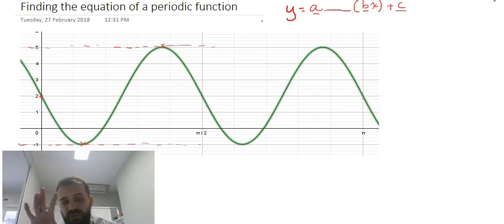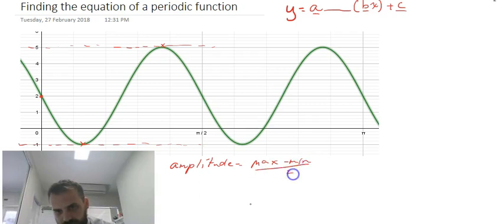So from that you can find out the amplitude. The amplitude is going to be equal to this minus this divided by 2. So max minus minimum divided by 2.